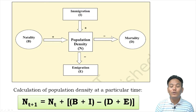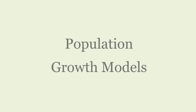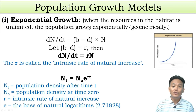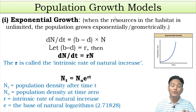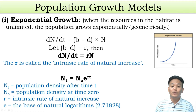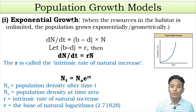Now let us talk about population growth models. Environmental scientists use population growth models to describe or predict how a population in a given habitat will change over time. We have two growth models: the first one is the exponential growth model.